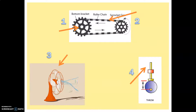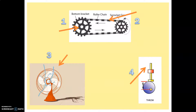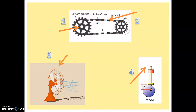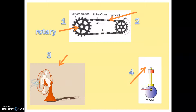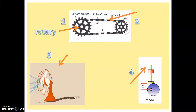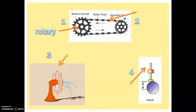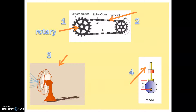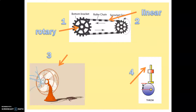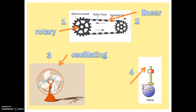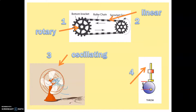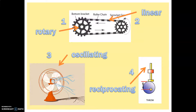Here are some examples. Number one is going to go around and around — that's rotary. Number two is probably the trickiest: we have arrows indicating what's happening with that roller chain, and it's only going in one direction, so it's linear. Number three — our fan is moving in an arc, so it's oscillating. And number four — the little follower for our cam toy is going up and down repeatedly, which is a reciprocating motion.